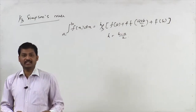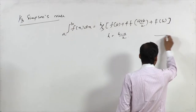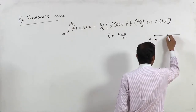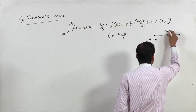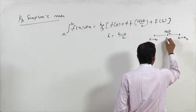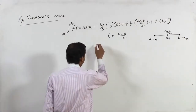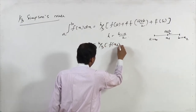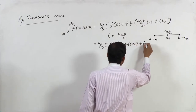Since we are dividing this total domain into two sub-parts, if our starting point is a equals x0, then the midpoint is (a+b)/2 and the last point b is x2, with the middle point as x1. We can rewrite the formula as h/3 times [f(x0) + 4f(x1) + f(x2)].